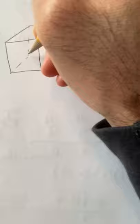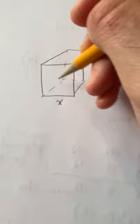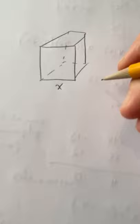It can help to start by trying to visualize it. We have a cube — let's say it has a side length x. Remember that a cube is like a square in that all of the sides have the same exact length, it just has more sides. The volume of the cube is just going to be x cubed.